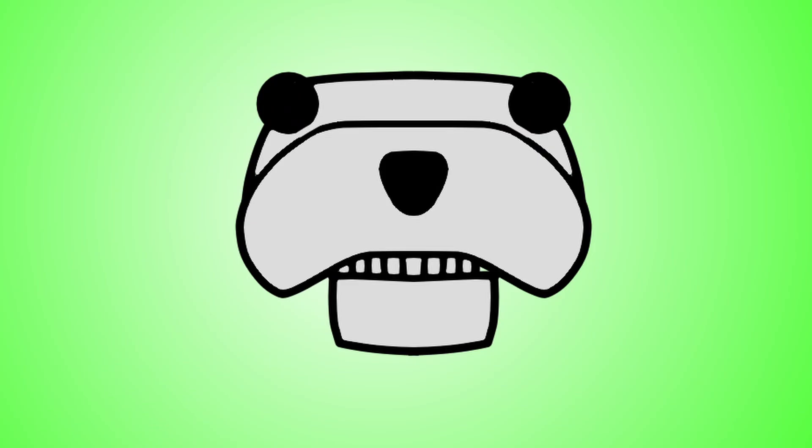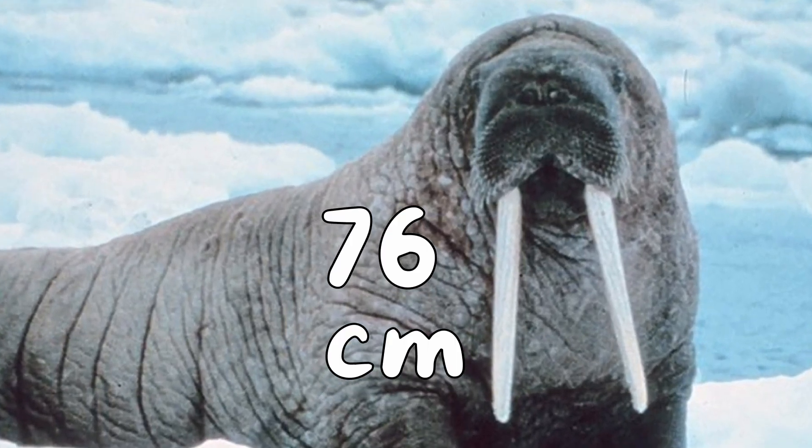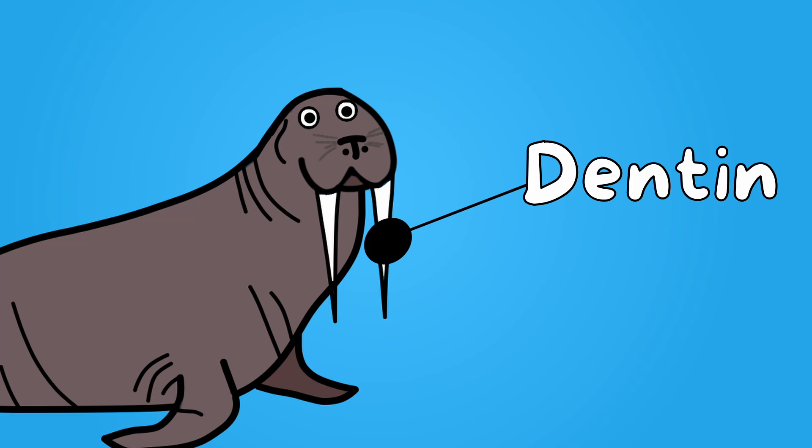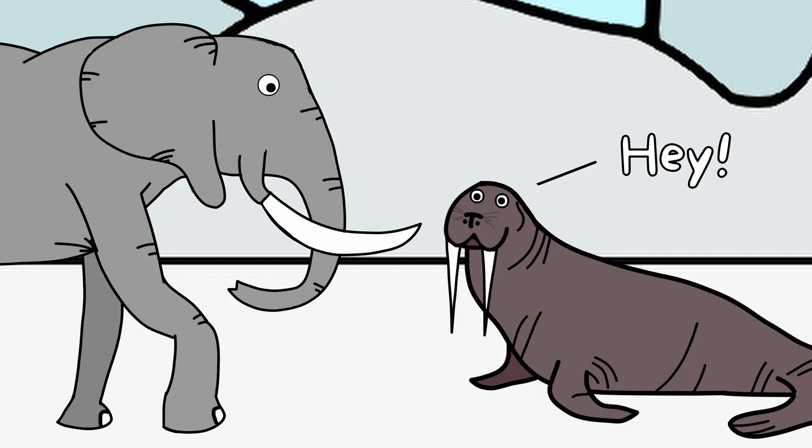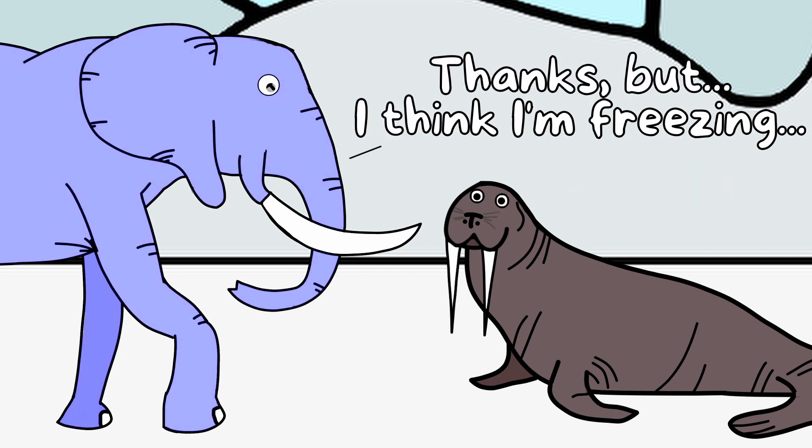Walrus tusks are simply the upper canines of the animal, though evolution has shaped them in a slightly unusual way. They can reach up to an astonishing 76 cm in length. When it comes to their composition, they're made of dentine, a mineral that makes them very hard and resistant. They are similar to elephant tusks, though different enough to be told apart after some minor analysis.